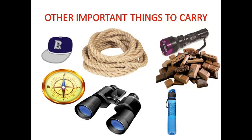There are some other important things to carry during a field visit. You need a cap to protect your head from harsh sunlight or rain. You need a rope if you are crossing a tough or rough region. You need a torch, which will help if you are going early in the morning or late in the evening. You also need binoculars to observe far-away things, a water bottle to drink water regularly, and chocolates to give you energy in rough and tough regions.